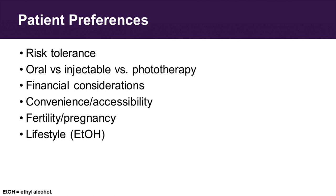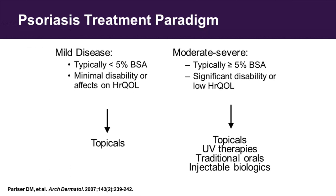For patient preferences, I'm trying to understand what is their tolerance for risk, their preference for oral medications versus injectables versus light therapy, their financial considerations, convenience, accessibility, their fertility or pregnancy planning, and their lifestyle — including how much alcohol they drink. We tend to think of it in a dichotomous way: people with localized disease and minimal quality of life impairment we usually approach with topicals; people who have moderate-to-severe disease are more extensive to get into.